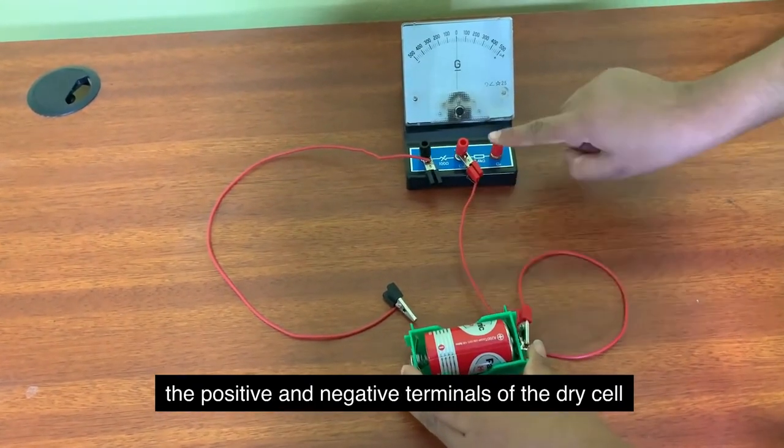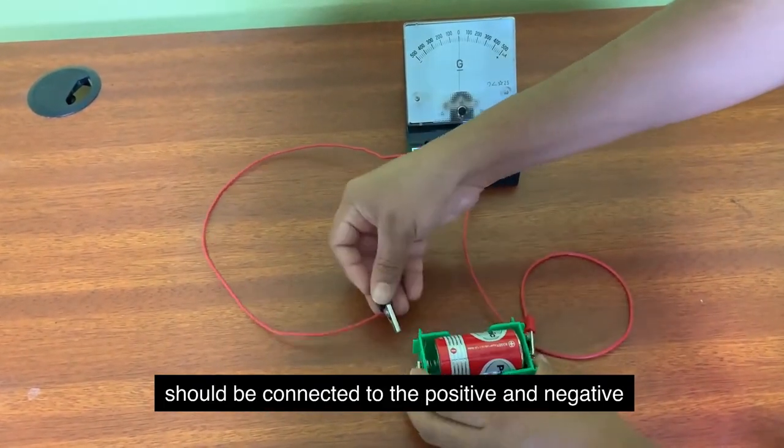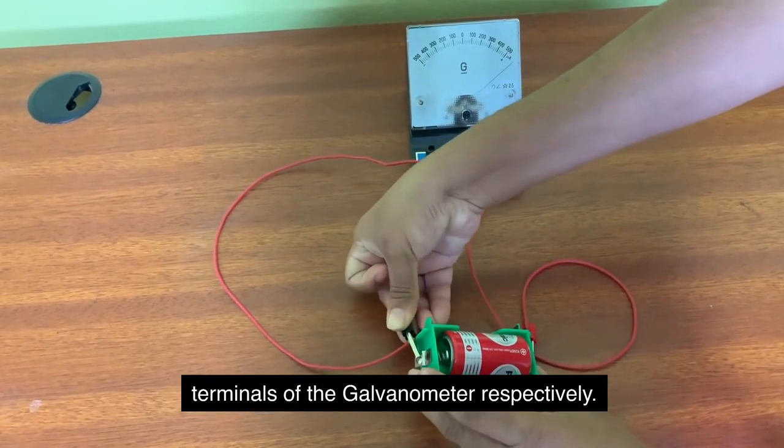The positive and negative terminals of the dry cell should be connected to the positive and negative terminals of the galvanometer respectively.